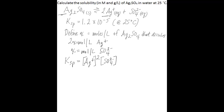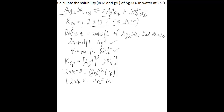Substitute in what you know. Ksp is 1.2 times 10 to the negative 5, which equals 2X squared times X — where 2X is the silver concentration and X is the sulfate concentration. Solving: 1.2 times 10 to the negative 5 equals 4X cubed. Dividing both sides by 4, X equals 1.4 times 10 to the negative 2 molar.